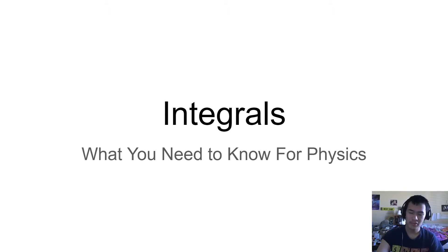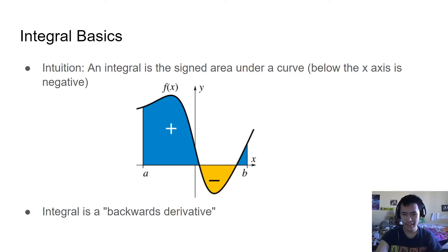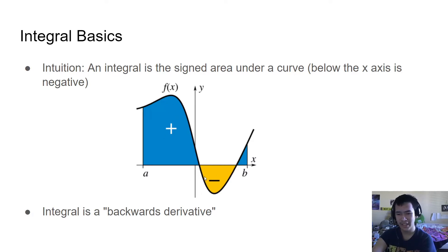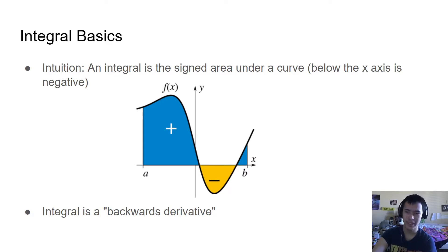When we talk about integrals, you should intuitively understand it as the signed area under a curve — area below the x-axis is negative. So you take this area and subtract this area from it, then add this tiny area, since all of that is part of the interval we're taking the integral of. It's the blue bits minus the yellow bit. You can also think of an integral as a backwards derivative, and we'll get more into what that means in just a bit.